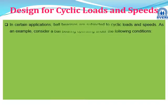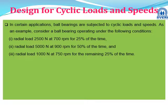In many situations a bearing is subjected to different loading conditions. It is not always possible that the bearing will operate at a constant speed for its lifetime. In many applications the bearing is subjected to cyclic load and speed. As an example, consider a typical cycle: a bearing is subjected to a radial load of 2500 N at 700 rpm for 25% of time, radial load of 5000 N at 900 rpm for 50% of time, and radial load of 1000 N at 750 rpm for remaining 25% of time.